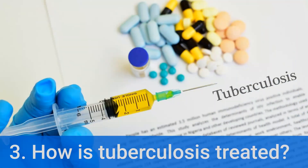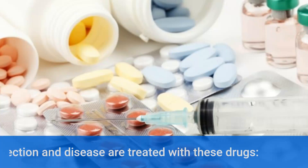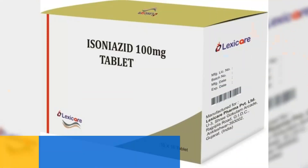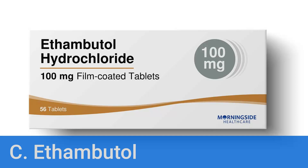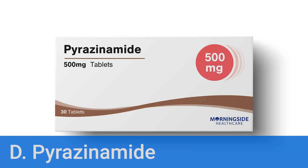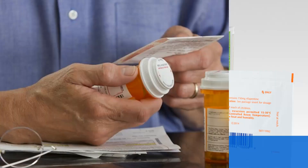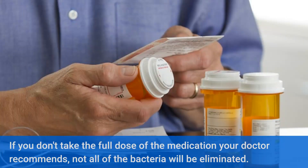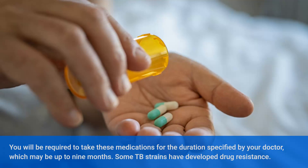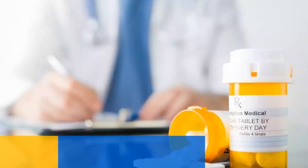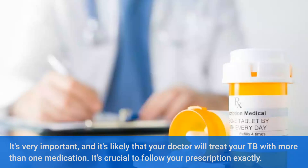How is tuberculosis treated? Infection and disease are treated with these drugs: Isoniazid, Rifampin, Ethambutol, Pyrazinamide, and Rifapentine. If you don't take the full dose of the medication your doctor recommends, not all of the bacteria will be eliminated. You'll be required to take these medications for the duration specified by your doctor, which may be up to 9 months. Some TB strains have developed drug resistance, so it's likely that your doctor will treat your TB with more than one medication. It's crucial to follow your prescription exactly.